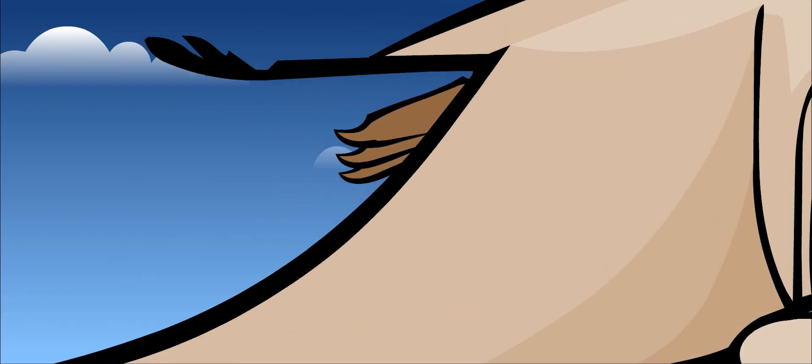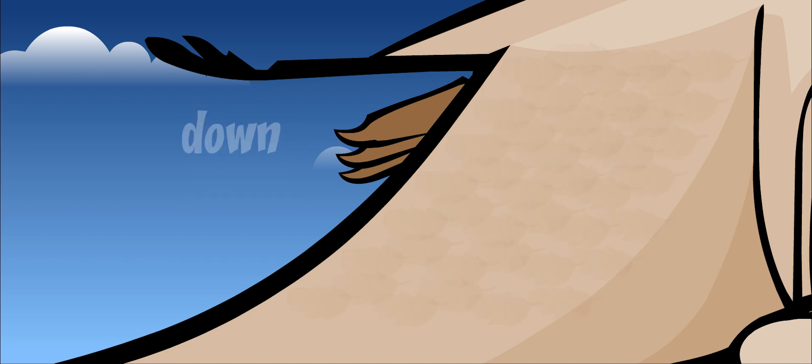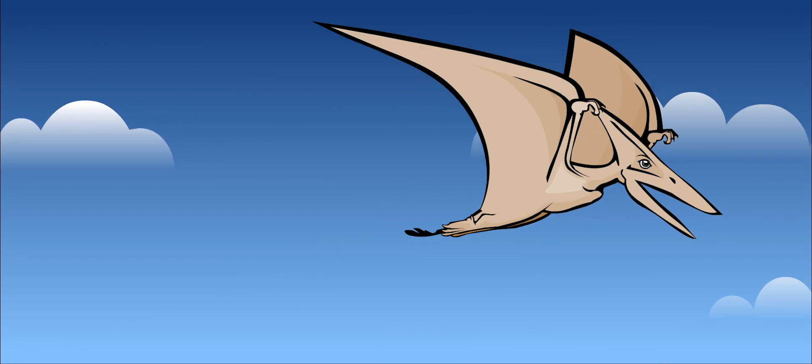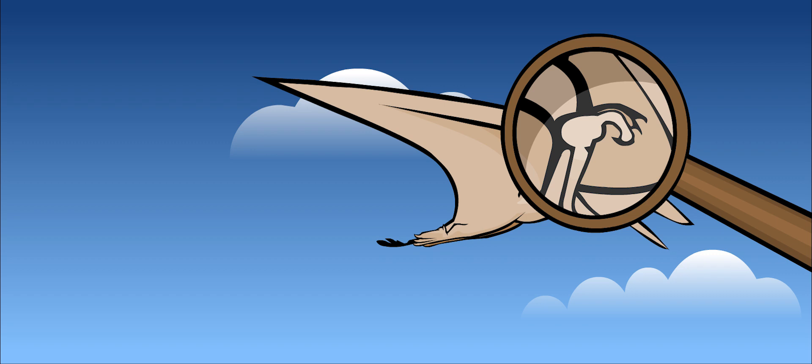Pteranodons were covered with very small, soft feathers called down. This might have looked and felt like fur. They had large brains and could see very well. They had sharp claws on their fingers, which they used to grab their food.